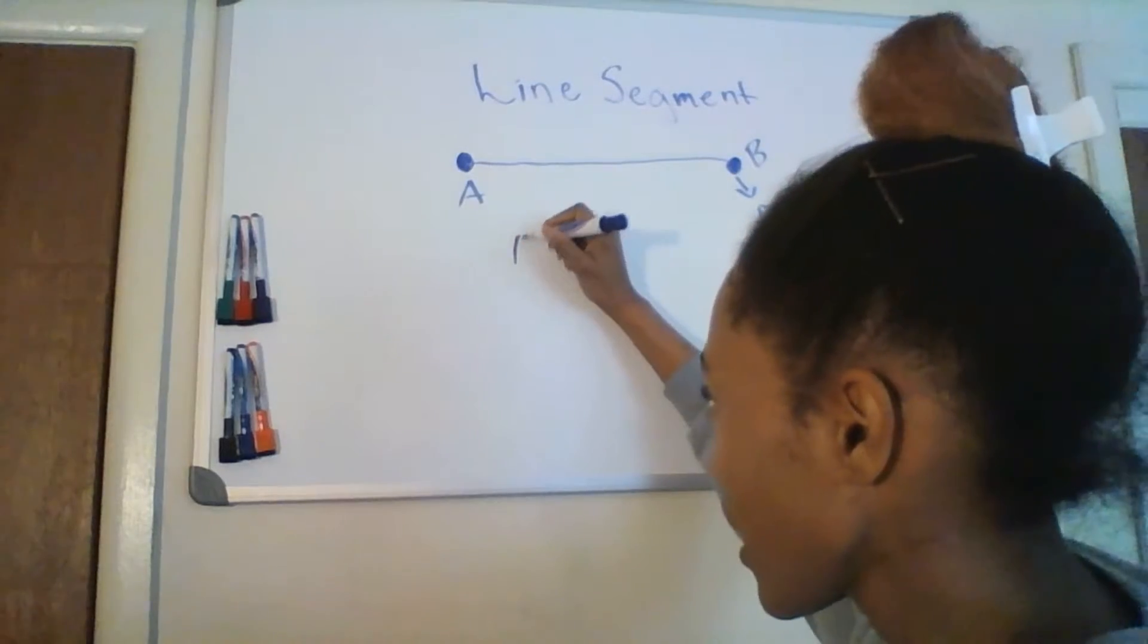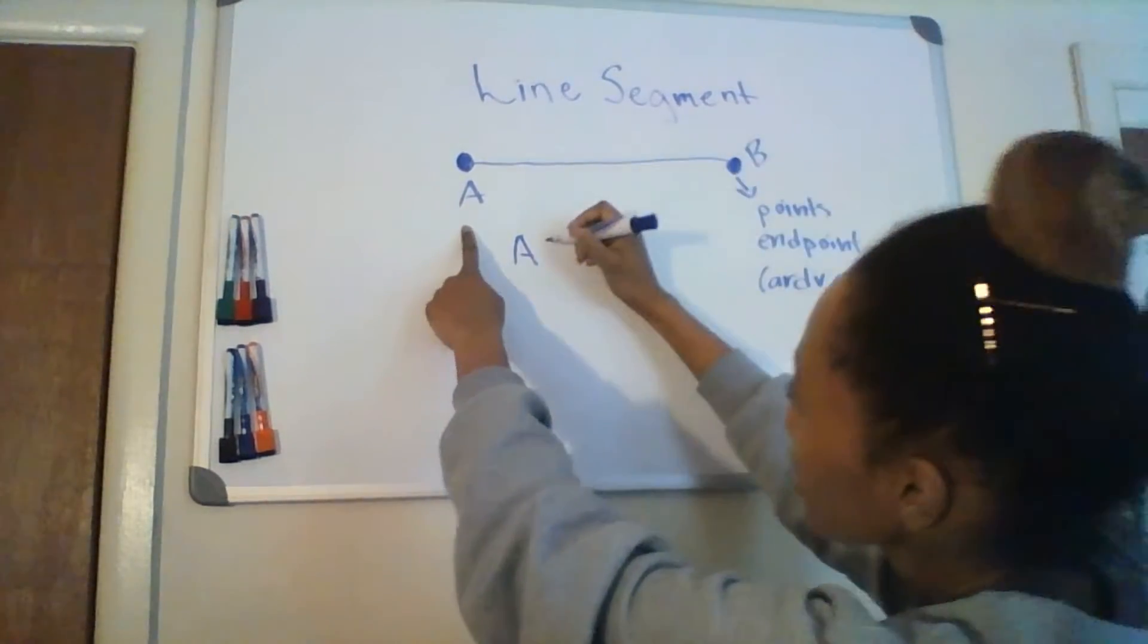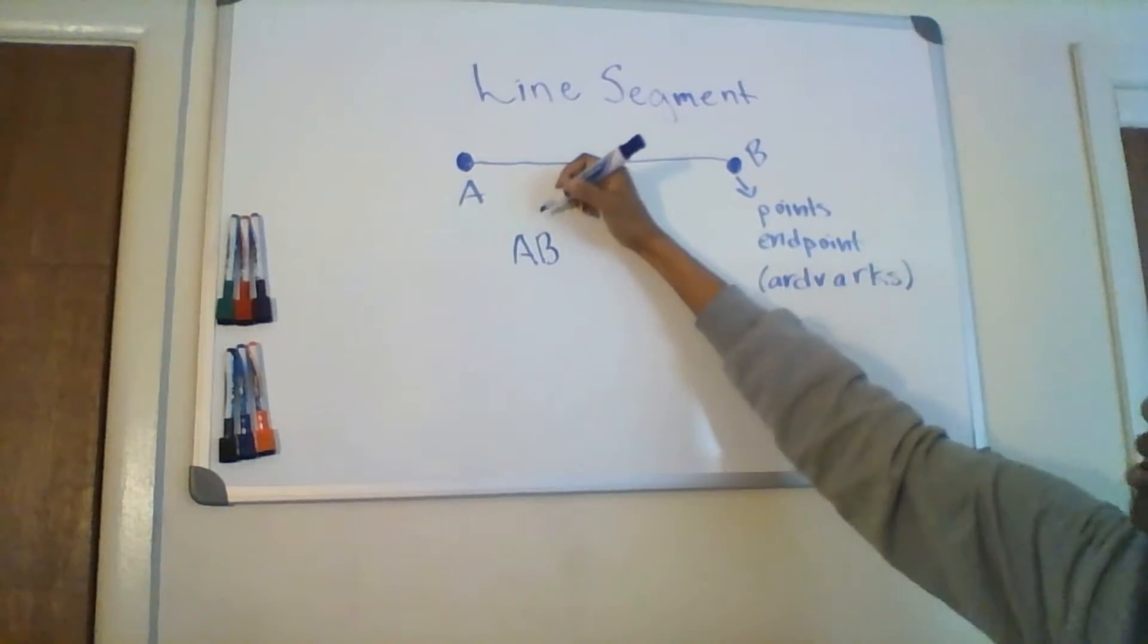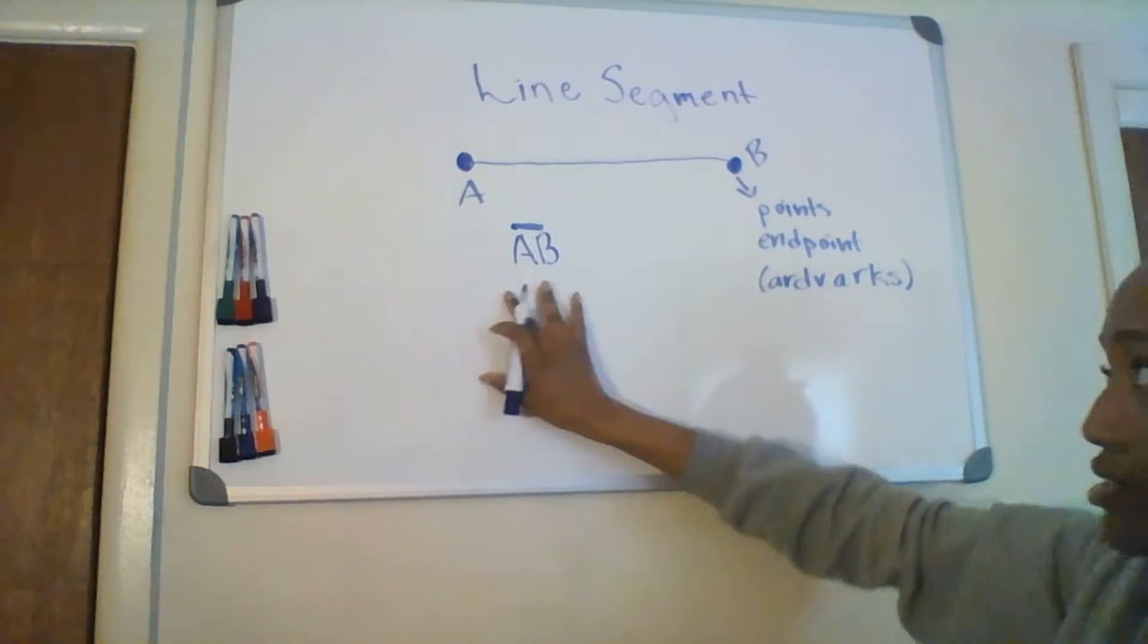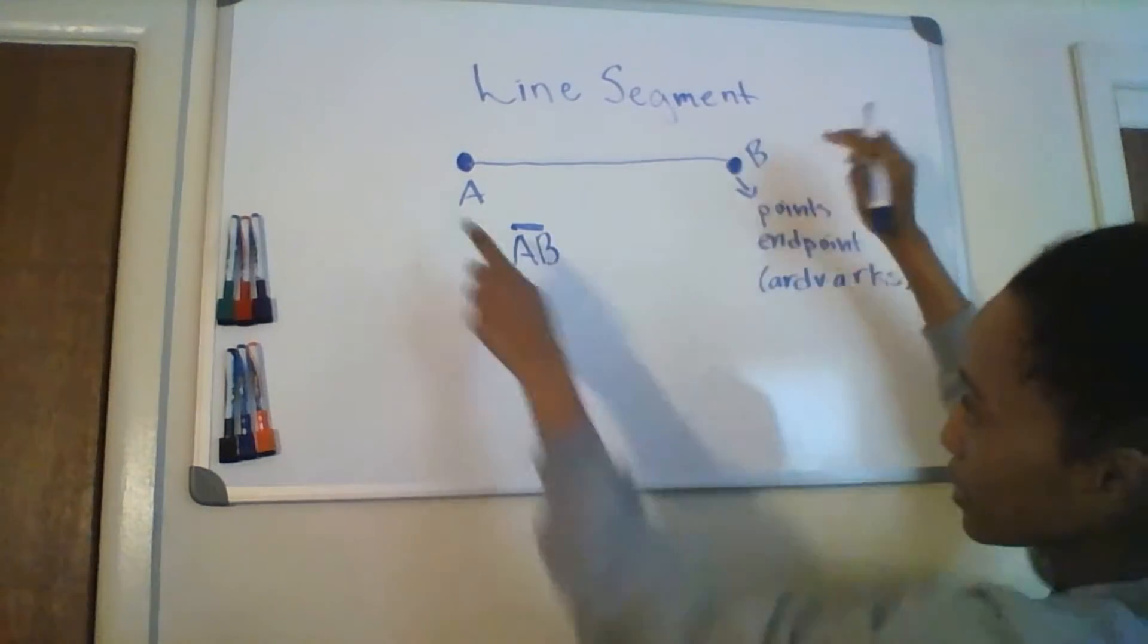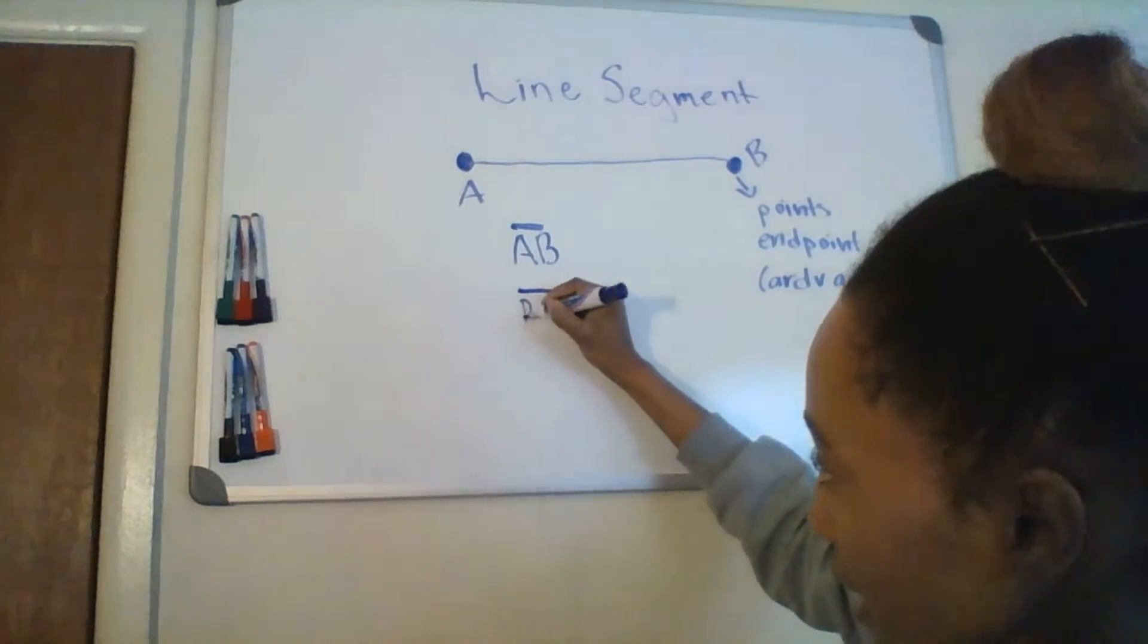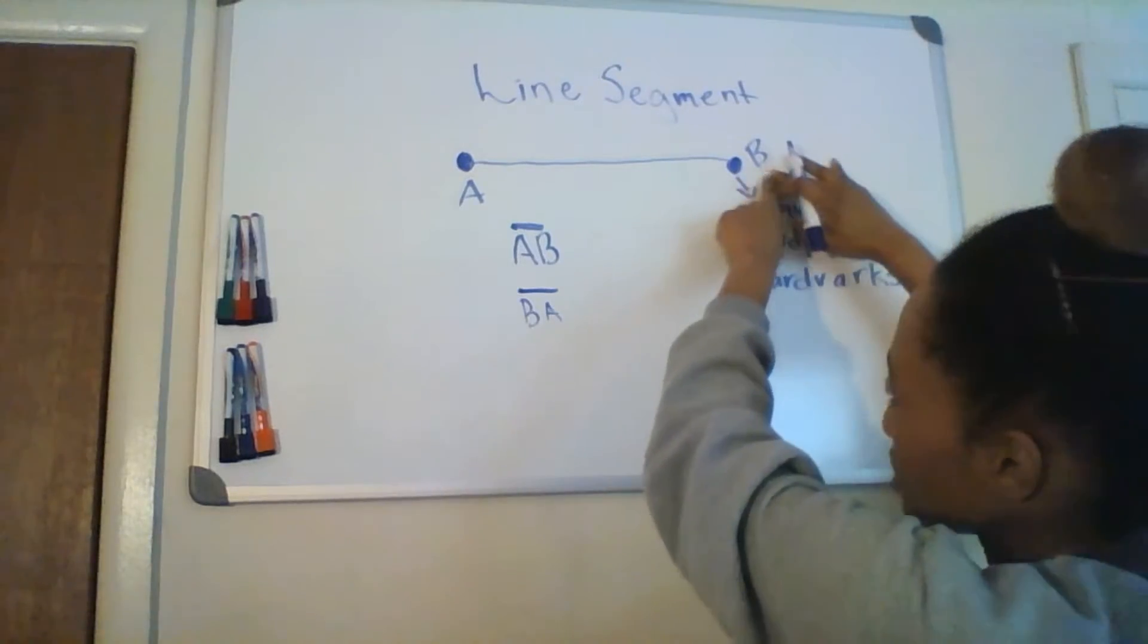You would write the letter A, which corresponds to the first point, B, which corresponds to the second, and you would write an overline above it. And this denotes the line segment AB. Or you can write an overline BA, and it would still refer to the line segment BA.